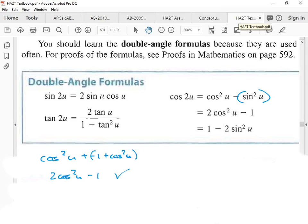Yeah, replace the cosine squared u. Let's do that one, too. If you guys haven't done it already. Cosine squared u. That's one minus sine squared u. Minus sine squared u. Check that out.